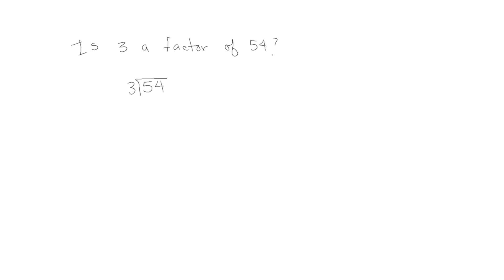So let's try that. I have 5 tens. I can put 1 in each group of 3. I subtract — I have 2 tens left. I add the 4 ones that I already have. I now have 24. 3 times 8 is 24, and when I subtract, there's no remainder. Therefore, 3 and 18 are both factors of 54.